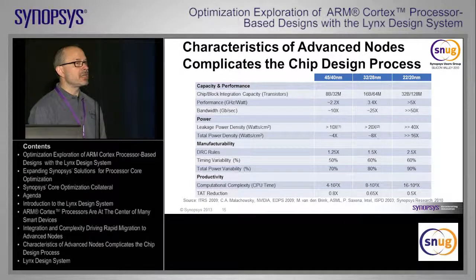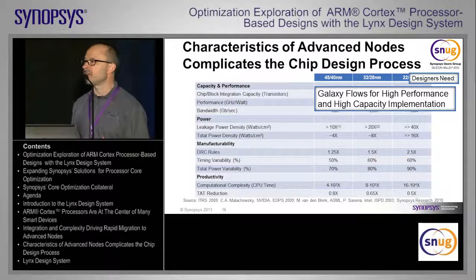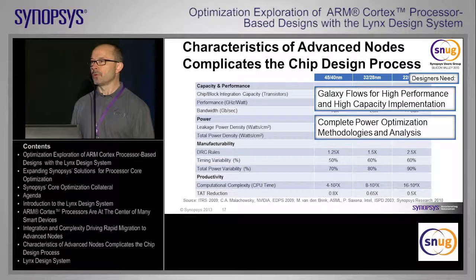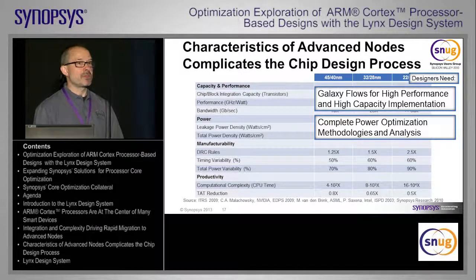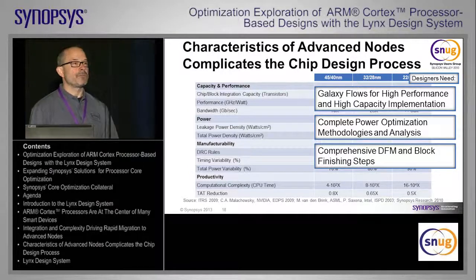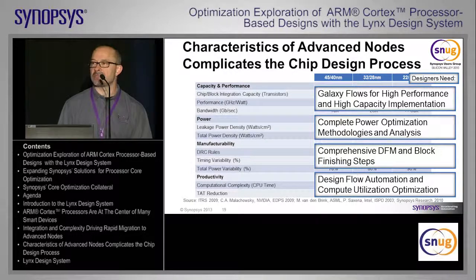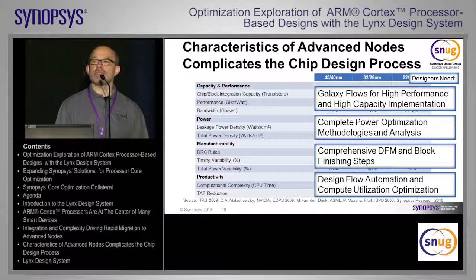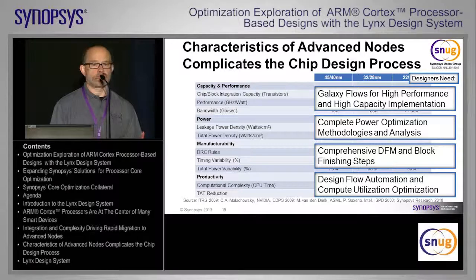If we can put together a design environment that pulls together complete production Galaxy flows with capacity-oriented, size-oriented, and performance-oriented methodologies already built in; if we can add complete power optimization and analysis techniques to help balance performance with the reality of power; if we can bring comprehensive block-level and chip-level finishing flows to help address design for manufacturability and sign-off; and if we can help address productivity bottlenecks — run-time, turnaround time, and overall design exploration time — then we can give the design engineer more time to focus on content and less worry about design flow infrastructure.